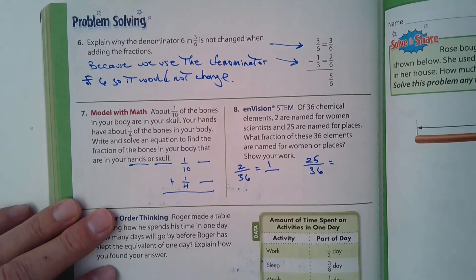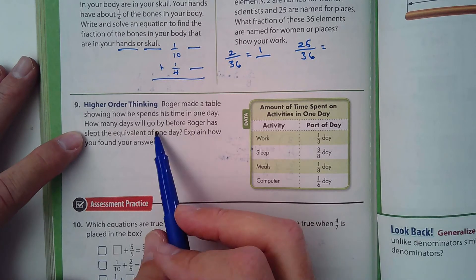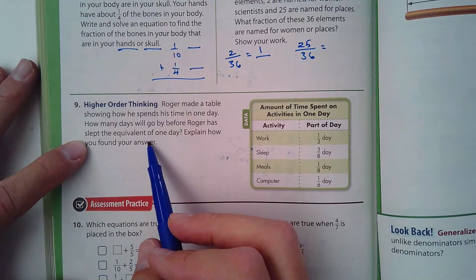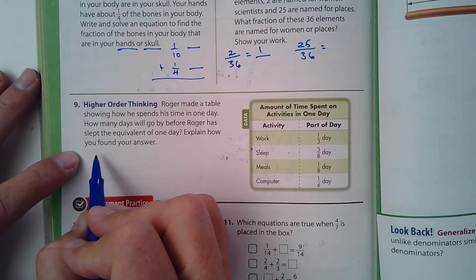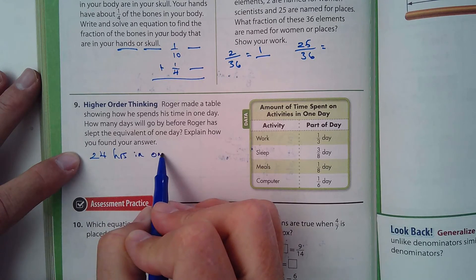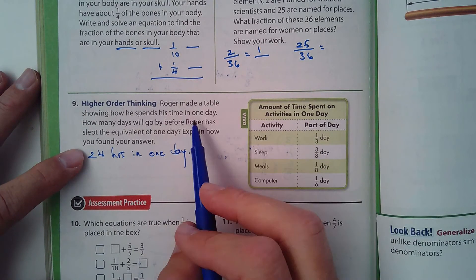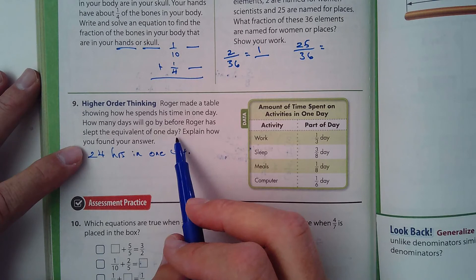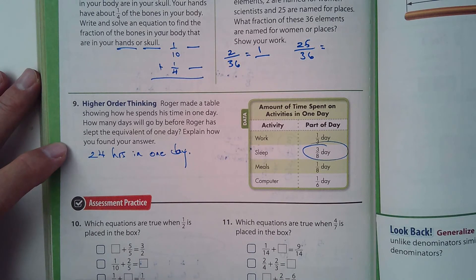Roger made a table showing how he spends his time in one day. How many days will go by before Roger has slept the equivalent of one day? All right, so how many hours are in a day? That would help—24 hours in one day. So how many days will go by before he has slept? He sleeps 3/8 of a day, so 3/8 of 24.